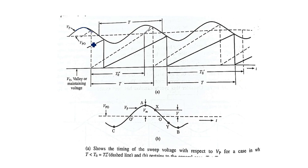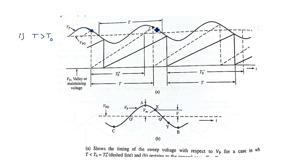For the condition T greater than T0: the sweep terminates at a point X, which is between the zero crossing (O) and the maximum positive peak (A). The capacitor charges to this higher value, so it takes more time — the time period increases. We are intentionally changing the period by selecting T greater than T0; the capacitor charges for a longer duration and the oscillator's time period is lengthened.